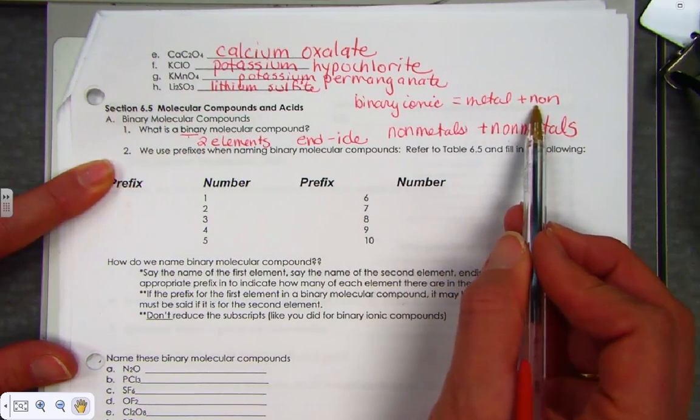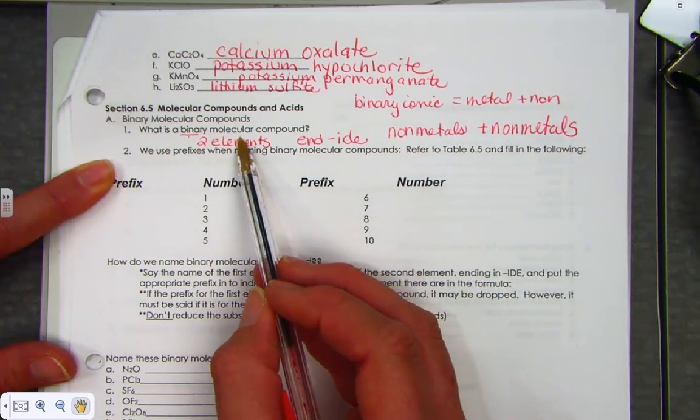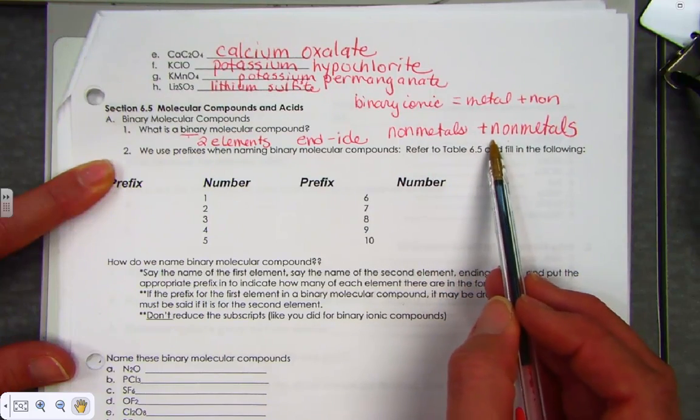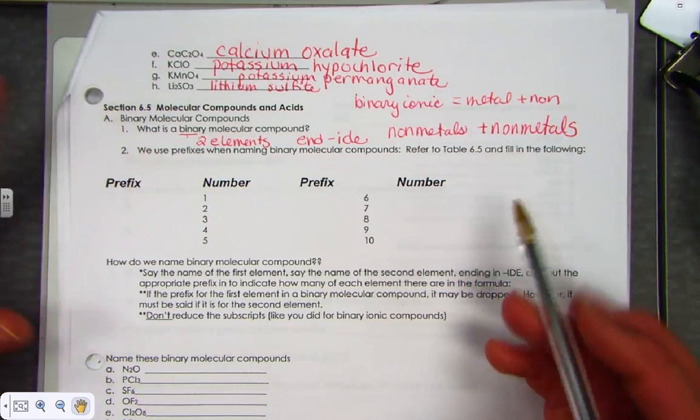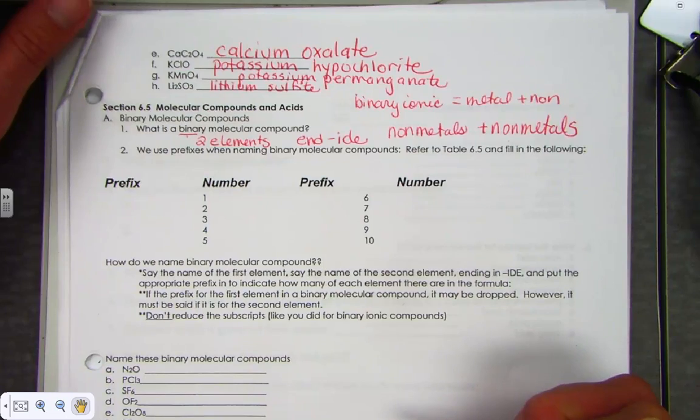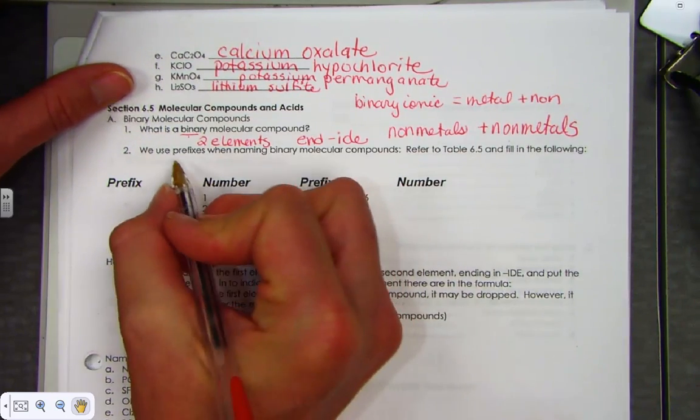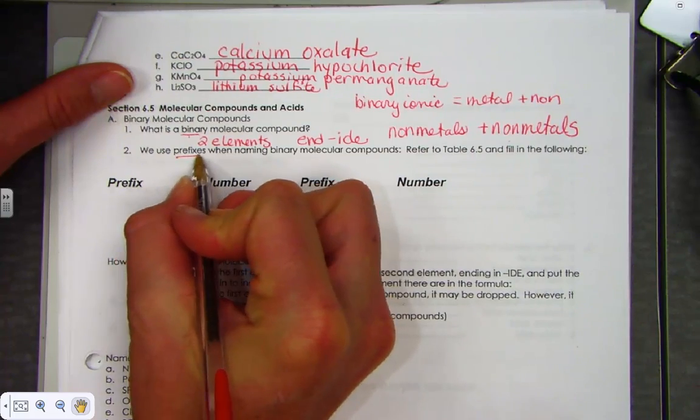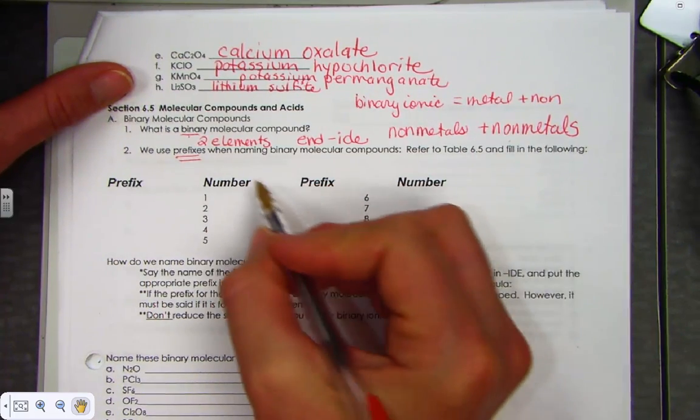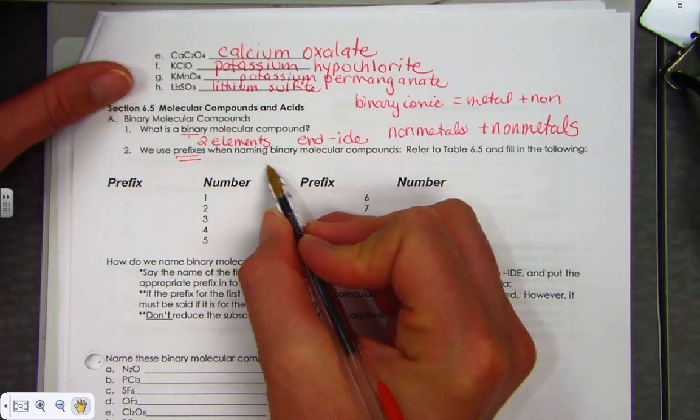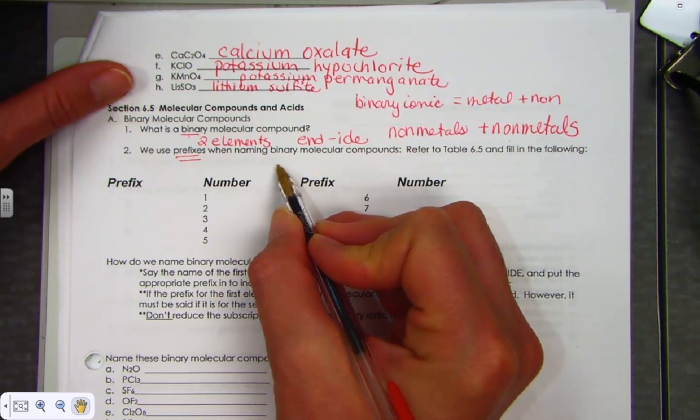Binary ionic, metal to non-metal. Binary molecular, non-metal hooked to non-metals. Since they form from different elements, we have a different set of rules for naming them. When we name molecular compounds, we use prefixes. The prefixes we use tell us how many of each atom there are in our formula.